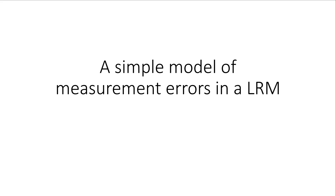We know a few things about a linear regression model with measurement errors. In particular, we know that if we have measurement errors in the explanatory variable, then the OLS estimator is no longer unbiased and consistent. The purpose of this lecture is to dig a little bit deeper into this issue, trying to understand why the OLS estimator becomes biased and inconsistent. We will do that with a very simple model of measurement errors that will help us understand the problem.